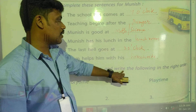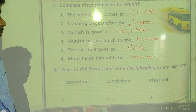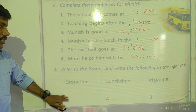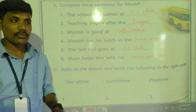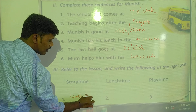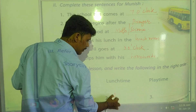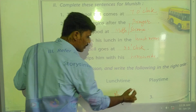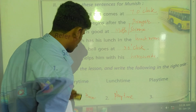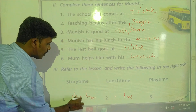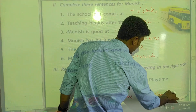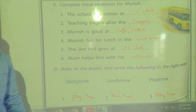Third activity: Refer to the lesson and write the following in the right order. Refer to the lesson means read the lesson. In the lesson, these words are there, and we have to put them in sequence according to the lesson. First is lunch time. After lunch, they have play time. After play, they have lunch time, and third is story time. Before going to their homes, they have story time.